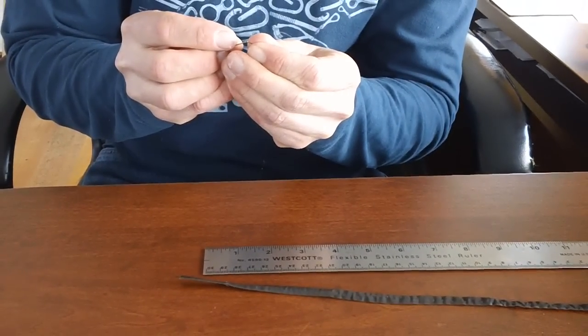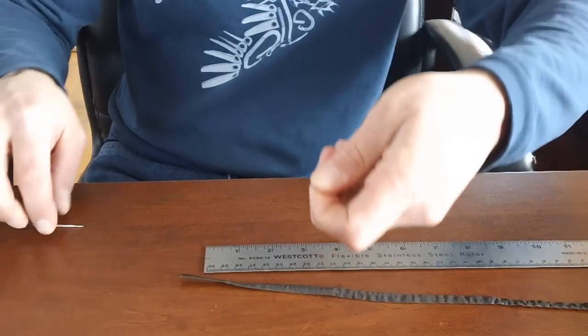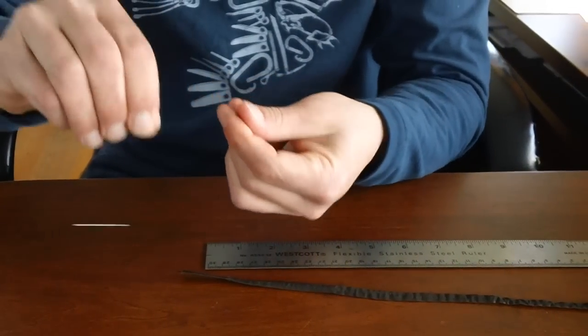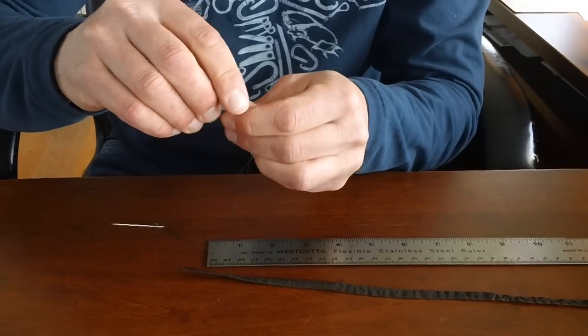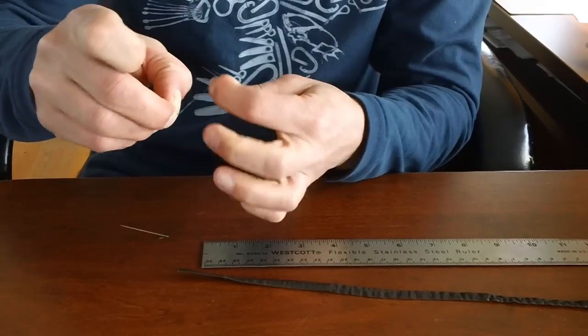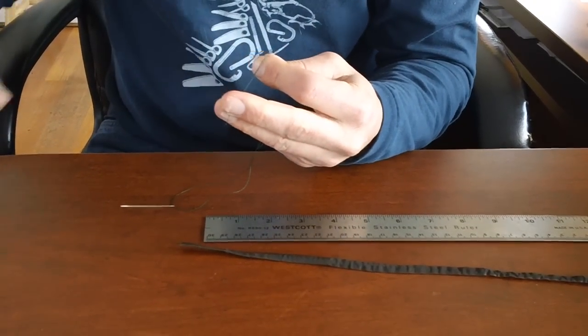And what I do, the easiest way to do this is just to double it up and then do an overhand knot here. Single overhand knot's fine. This won't come out. Trim off your excess.